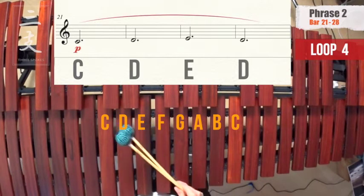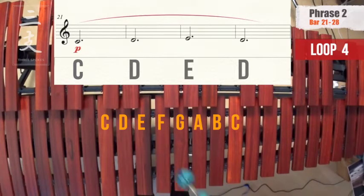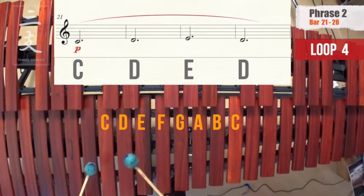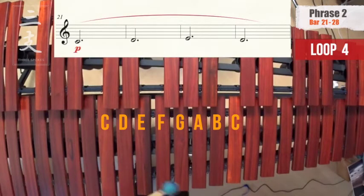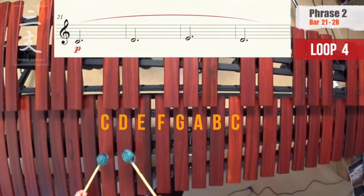In here, our dynamic is soft — piano — while the accompaniment is playing loud. So let's do it with the metronome: 1, 2, go.